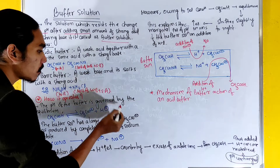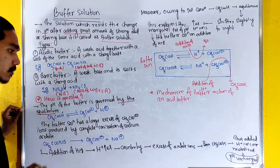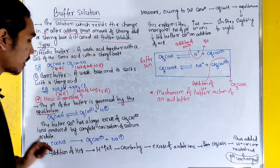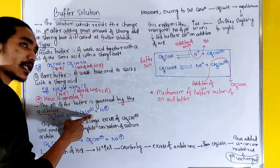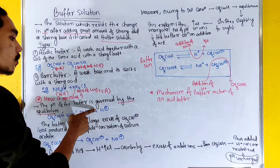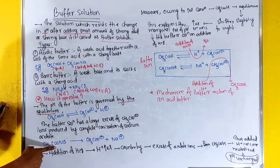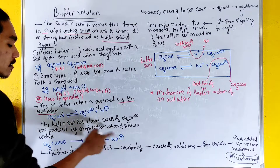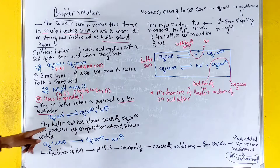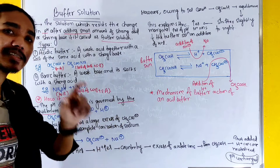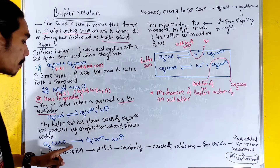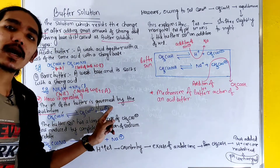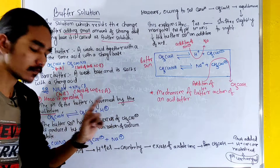The pH of the buffer is governed by equilibrium — the concept of ionic equilibrium. For example, we have CH3COONa which dissociates into CH3COO- and Na+. The buffer solution has a large excess of acetate ions produced by complete ionization of sodium acetate and partial ionization of acetic acid.